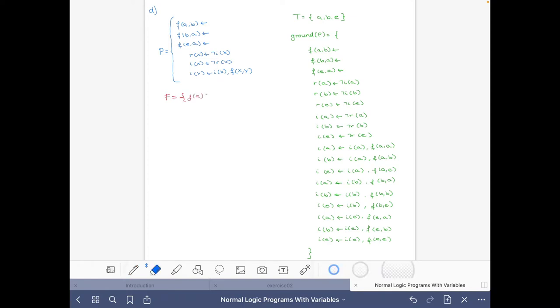f(a,b), f(b,a), and f(e,a). Now we know that all the stable models of the program will be a superset of these sets, so they will all contain these three atoms because they are facts.